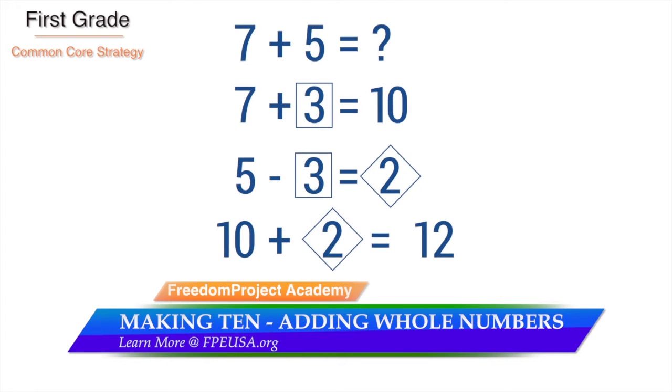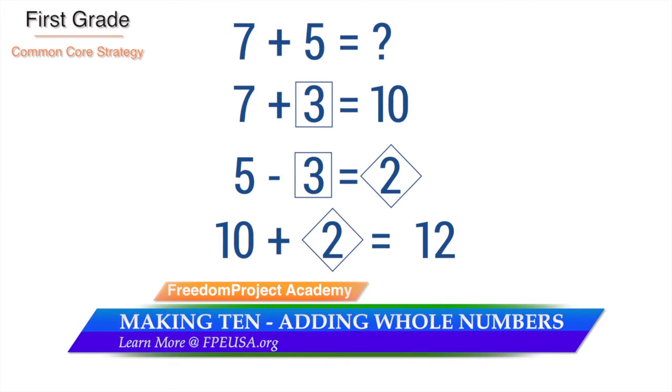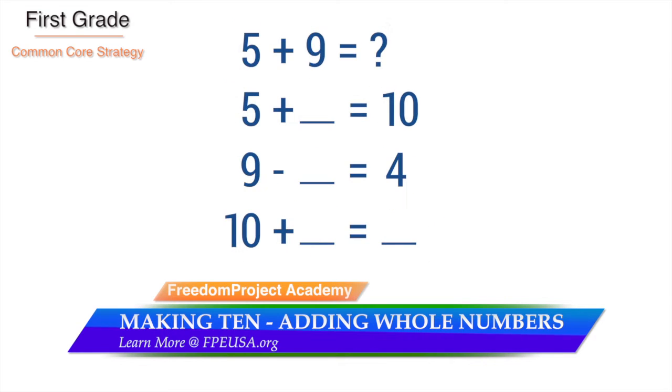Because this is developmentally inappropriate, the child must be trained by putting the same number in the squares and the same number in the diamonds. Once robotically trained, a first grade arithmetic problem looks like this.